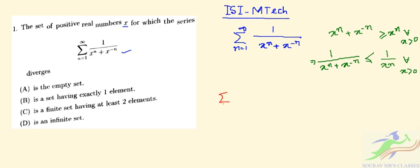summation from n=1 to infinity of 1/(x^n + x^(-n)) is less than or equal to summation from n=1 to infinity of 1/x^n.